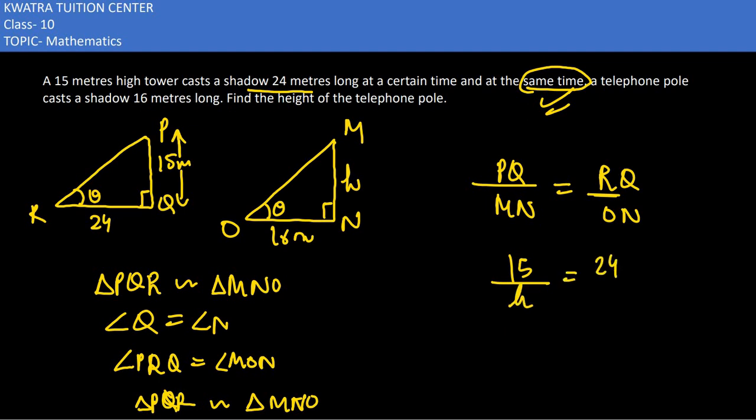Now we can use cross multiplication so we can simplify the answer. 15 times 16 equals 24h. 24 and 16 reduce to 12 and 8. 15 and 12 reduce to 5 and 4. 4 and 8 reduce to 2. 5 times 2 is 10.